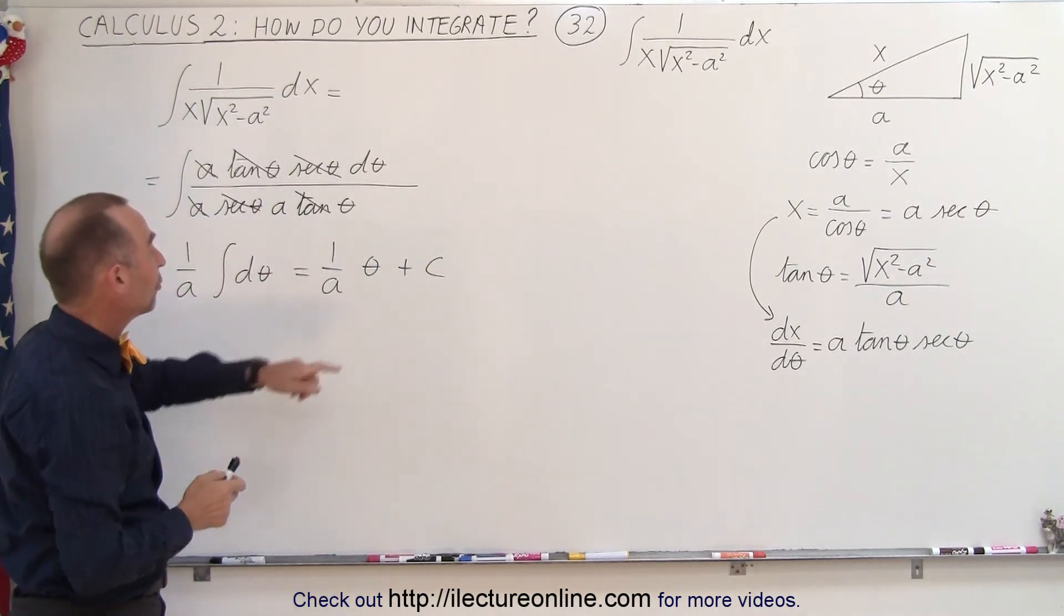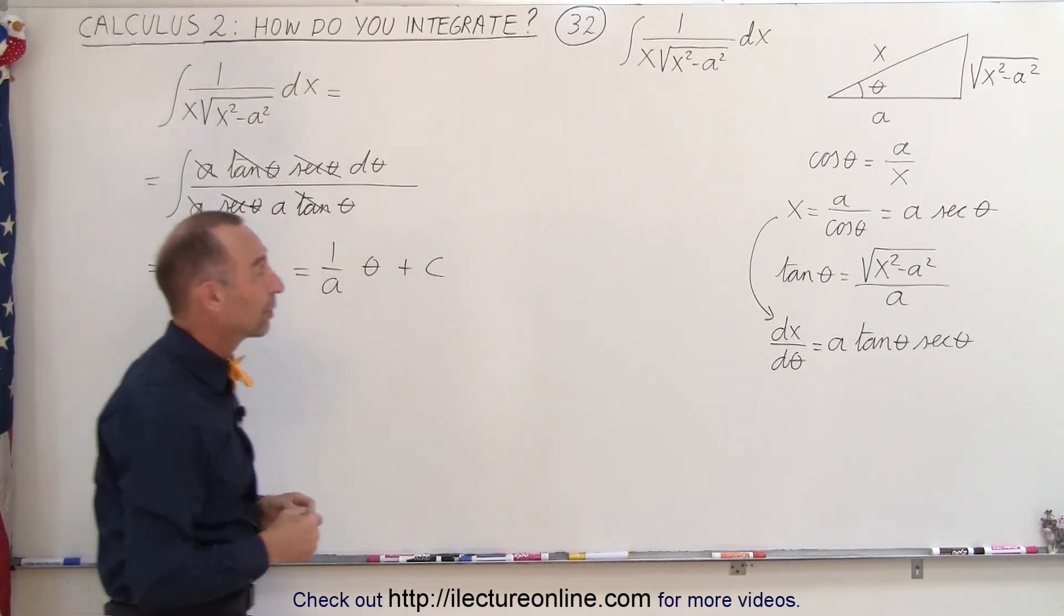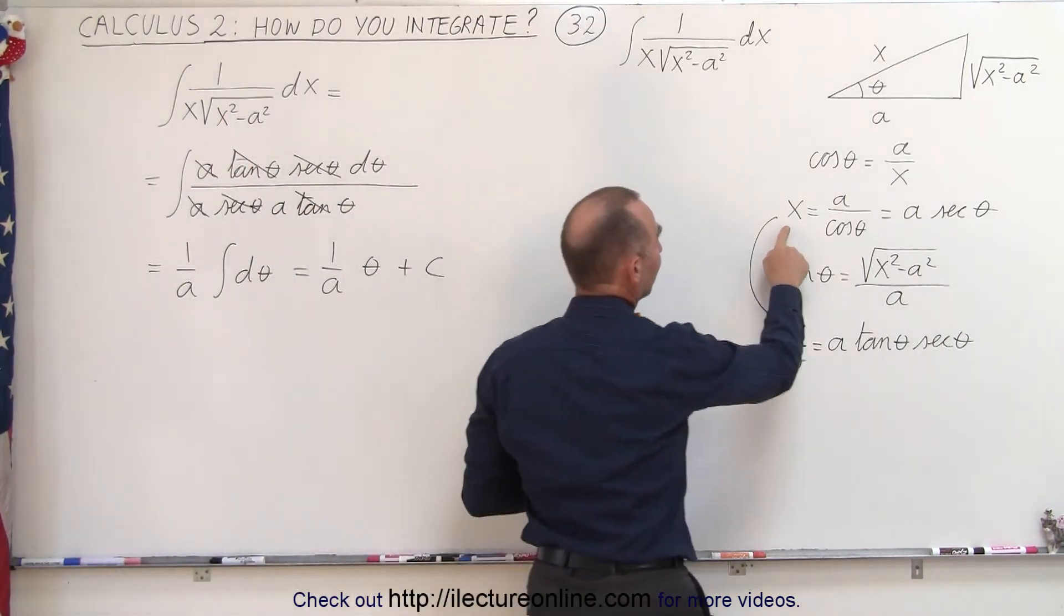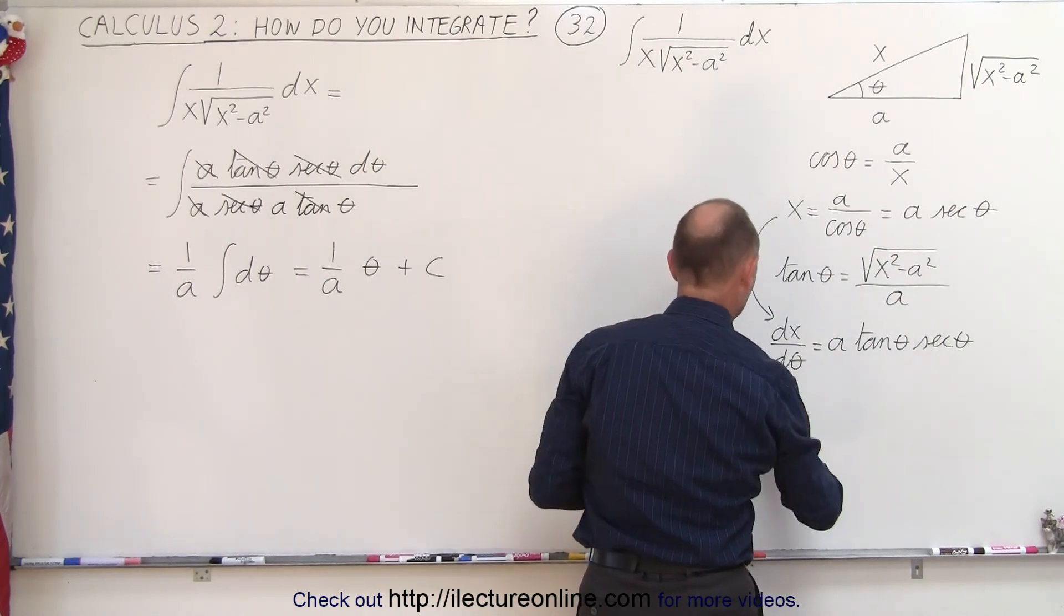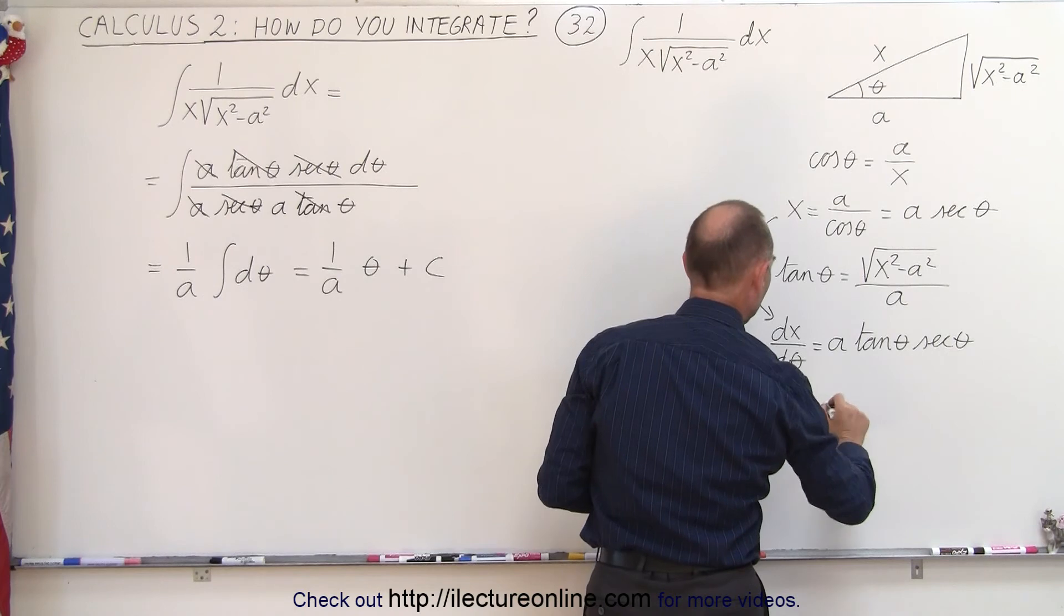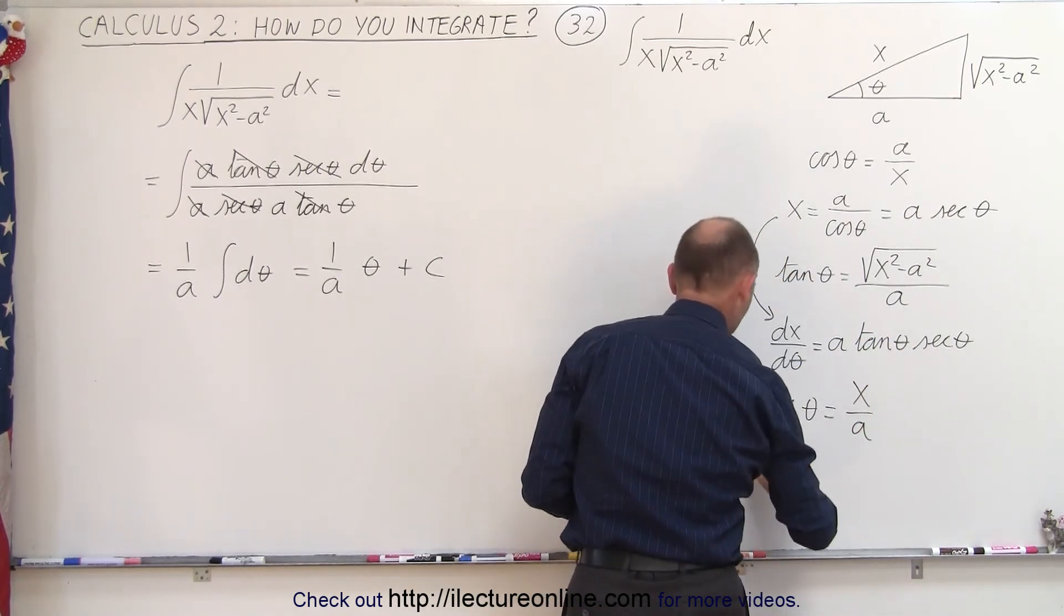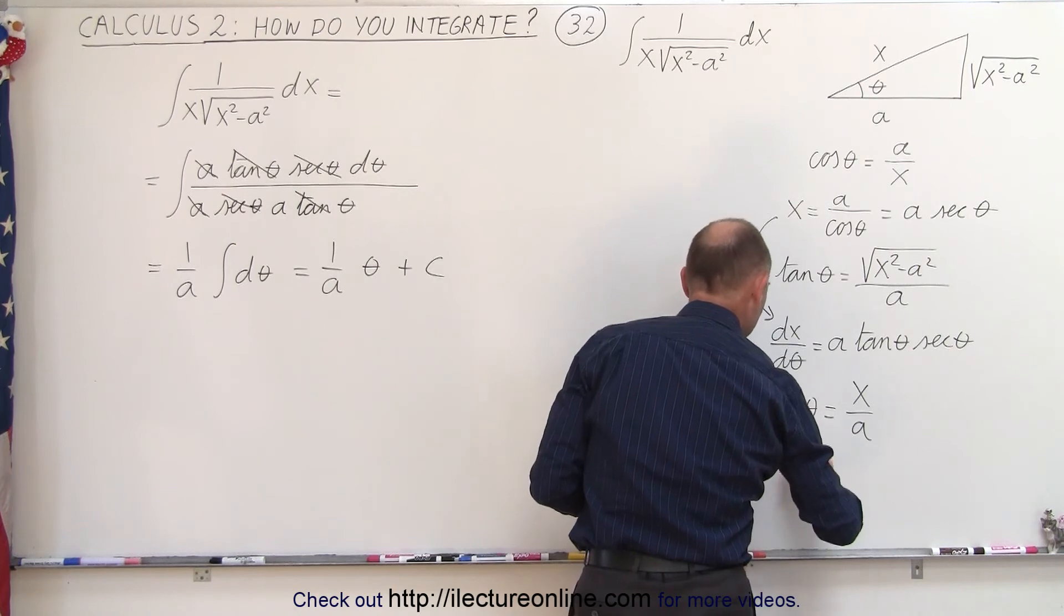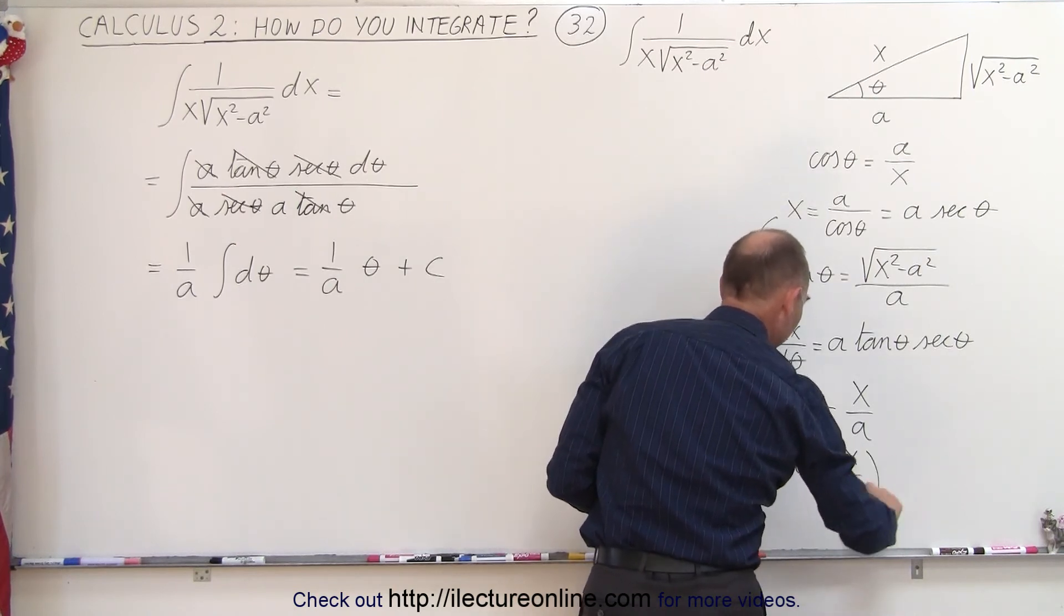And then we have to substitute back in what theta is equal to in terms of x. So coming back over here, we realize that x equals a secant of theta, which means that the secant of theta is equal to x divided by a, and therefore theta is equal to the inverse secant of the ratio of x over a.